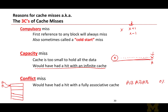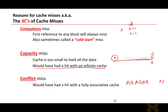To reduce conflict misses, you can try to map conflicting blocks to different cache lines, possibly by increasing cache size, or more importantly, by provisioning more ways so that A and B can be stored in the cache simultaneously. If you observe misses in a given cache that would not have occurred in a fully associative cache of the same size, then those misses are due to conflicts.